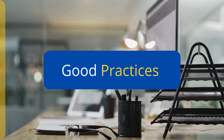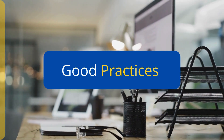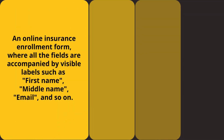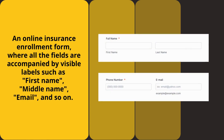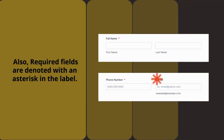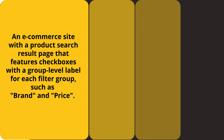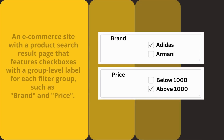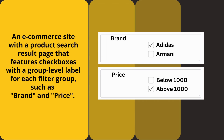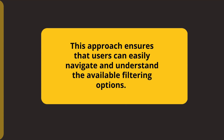Now let's take a look at a good example that demonstrates effective labelling. A good example can be seen in an online insurance enrolment form where all the fields are accompanied by a visible label such as first name, middle name, email, and so on. Also, required fields are denoted with an asterisk in the label. Another example is an e-commerce site with a product search result page that features checkboxes with the group level label for each filter group such as brand and price.